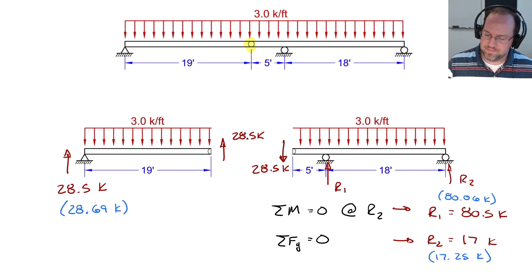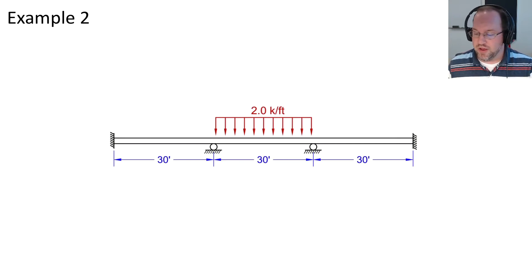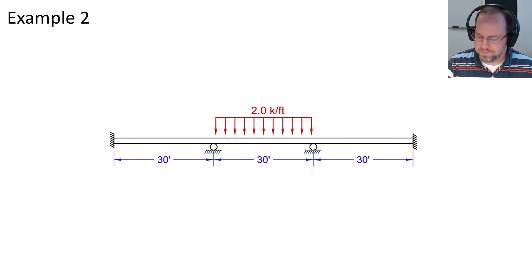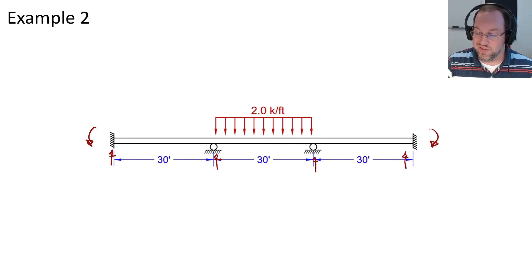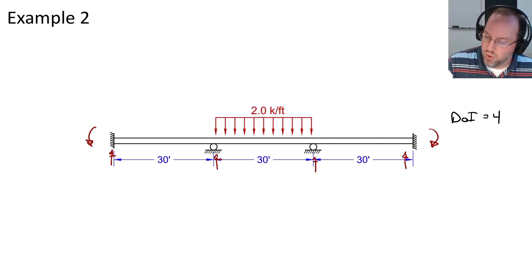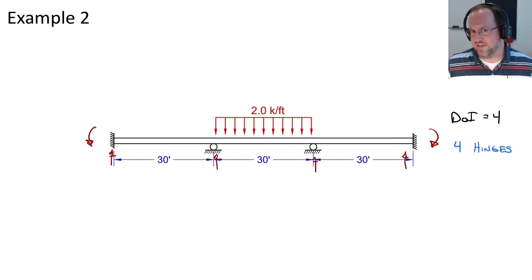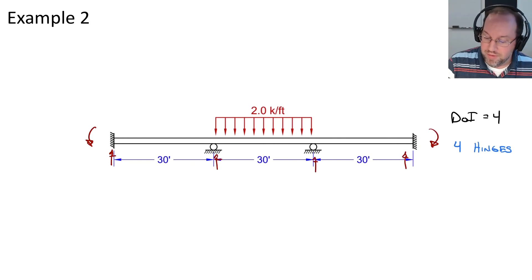Let's try one more example: a three-span system with load only on the center span. All three spans are equal, and the modulus and moment of inertia are constant along the length — if those vary, this method breaks down. We have six unknowns: four forces and two reaction moments, with only two useful equilibrium equations, giving a degree of indeterminacy of four. That means we need to add four hinges.